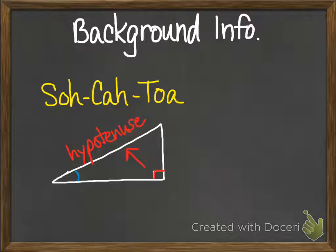So if we happen to be looking at this angle right here, then the side across from it is called the opposite side. And the side adjacent to it or next to it is labeled the adjacent side.